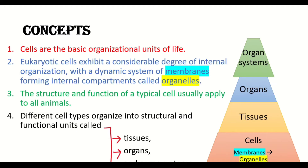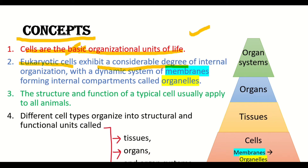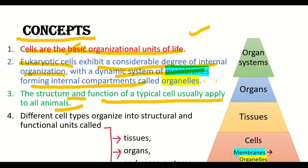Now we'll look into some concepts. Cells are the basic organizational units of life, and eukaryotic cells exhibit a considerable degree of internal organization, with a dynamic system of membranes forming internal compartments called organelles. The structure and function of a typical cell usually apply to all animals. Different cell types organize into structural and functional units called tissues, organs and organ systems.